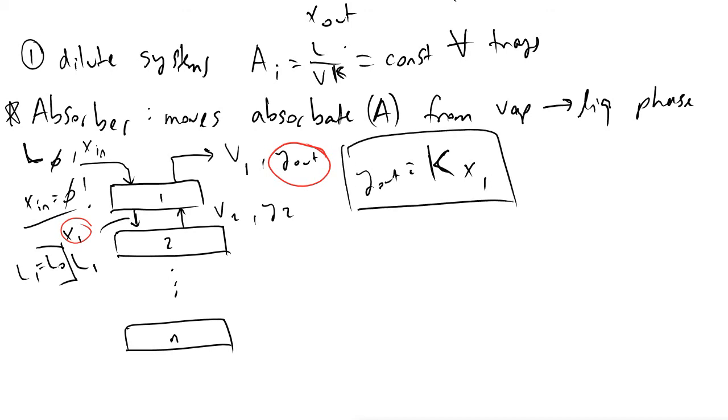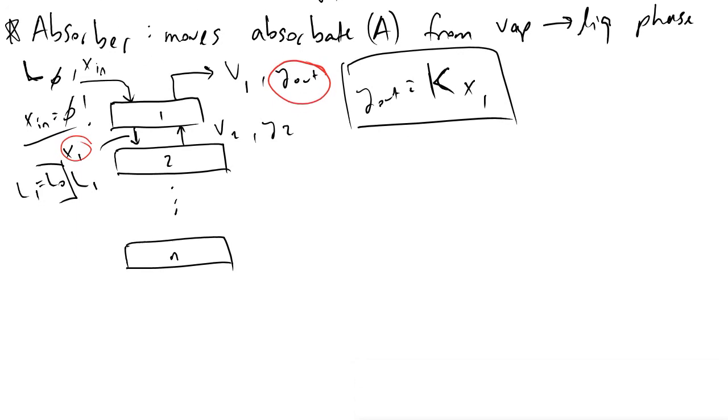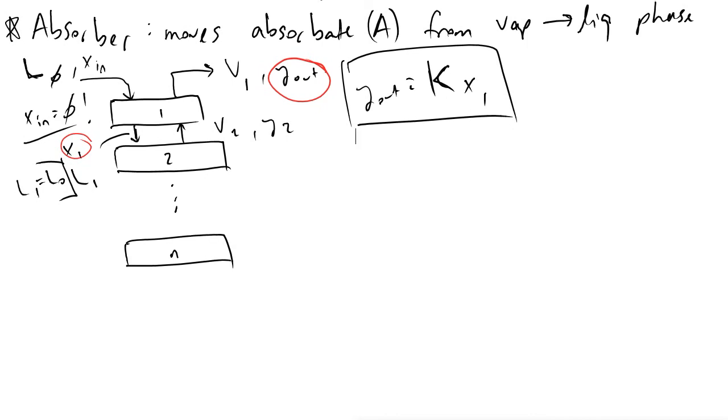So that is a key relationship to understand when working with absorption. And to examine what's happening in the bottom tray of our absorber column, we will have the liquid exiting L sub N, and that will have a composition of x_out. Entering our absorption column, we will have a vapor molar flow rate of V sub N minus one, because it's originating from the N minus one tray, as well as a composition Y sub N minus one, which is equivalent to Y_in.